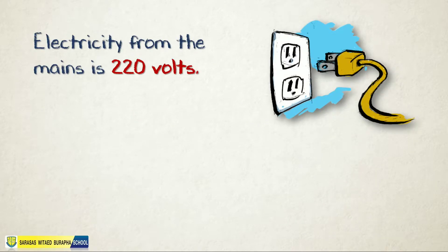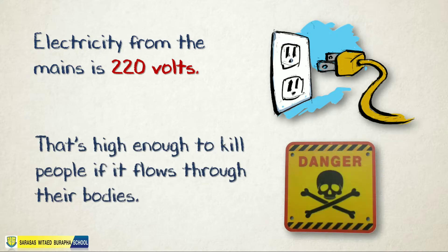An electricity tip from the mains is 220 volts, and that's high enough to kill people if it flows through their bodies. That's why it's really dangerous.